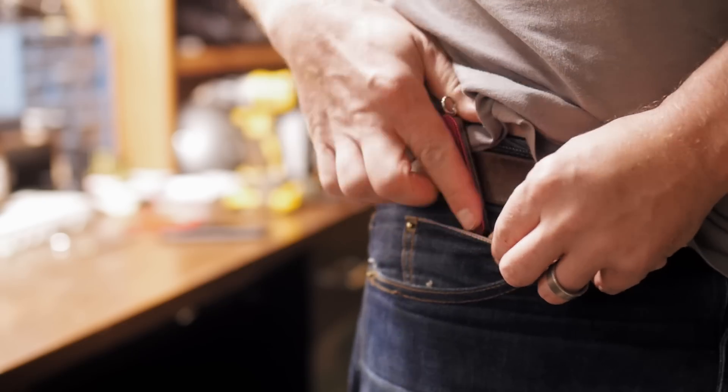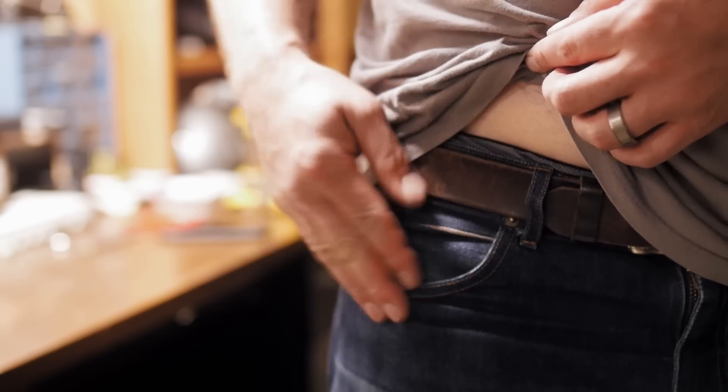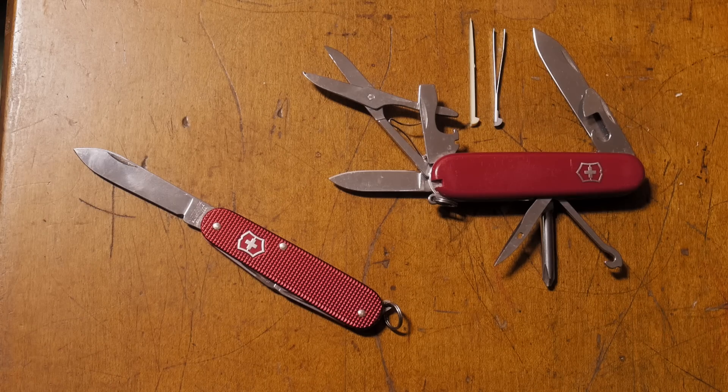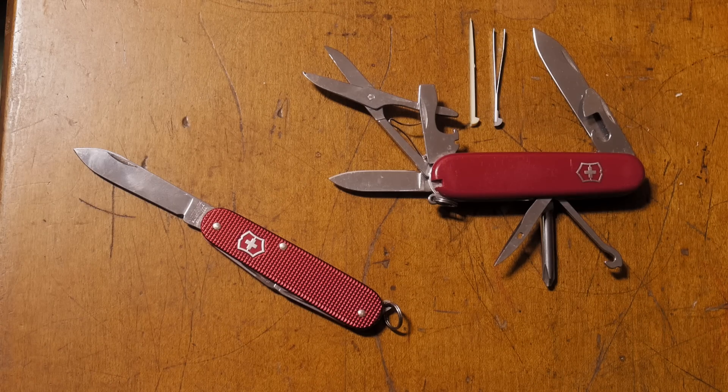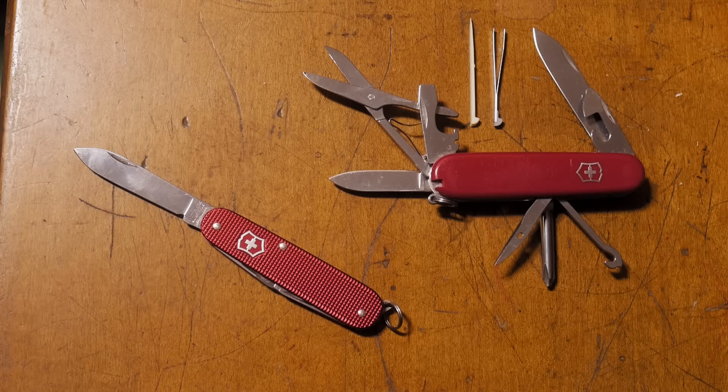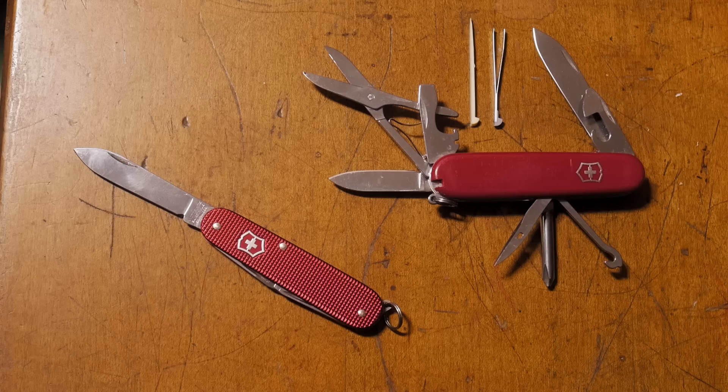If you need a larger swiss army knife with scissors and a phillips head and tweezers and a toothpick that allow you to do other gross grooming things, look at the super tinker which is around the same price but with smooth plastic scales and a thicker pocket carry. It's about the same length though.